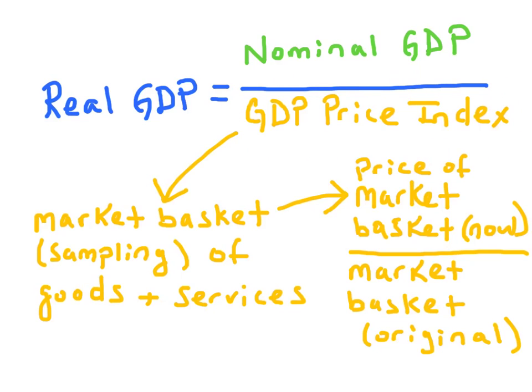A price index can be determined by taking a market basket of a specific year and dividing it by the market basket of a base year. A market basket is a sampling of goods and services produced within an economy.